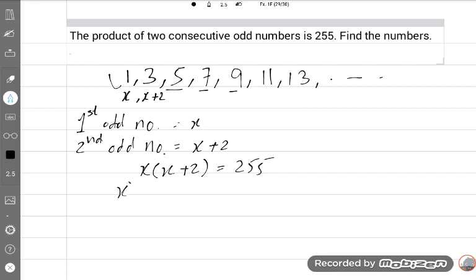Now we will multiply. X squared plus 2x is equal to 255. X squared plus 2x minus 255 is equal to 0. Now I will use midterm break. X squared plus 17x minus 15x minus 255 is equal to 0.